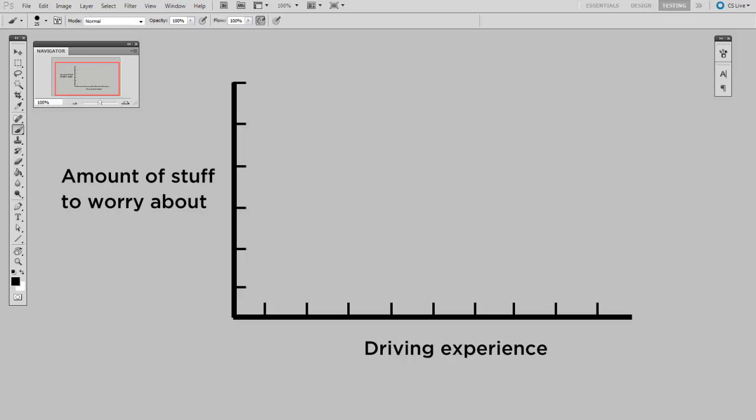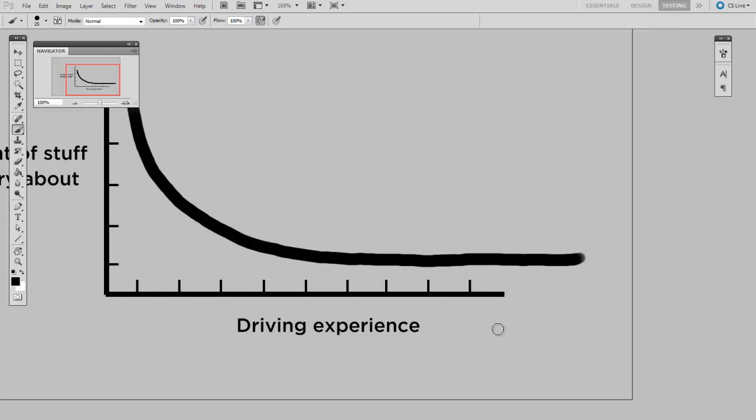Well, if I were to draw a graph of this, here's what it would look like. The y-axis is going to be the amount of stuff that you have to worry about, and the x-axis is driving experience. So you start out with a lot of stuff to worry about, and then over time, there's a huge fall off. And then from there on, you really just worry about a few things.